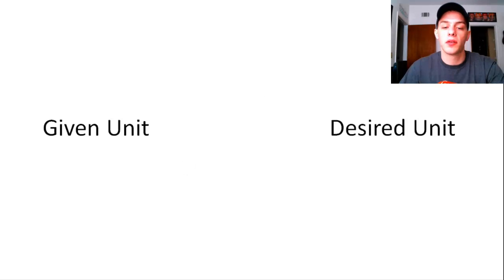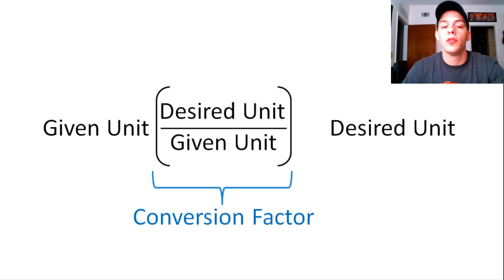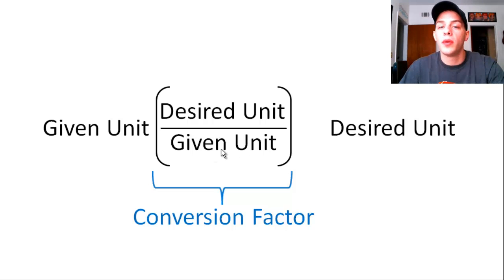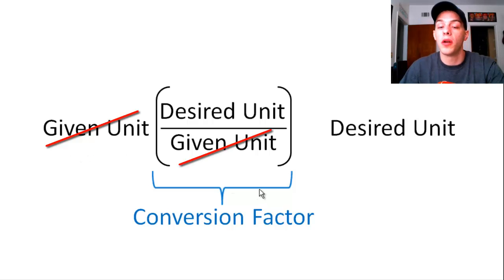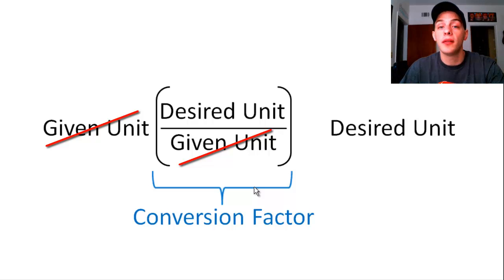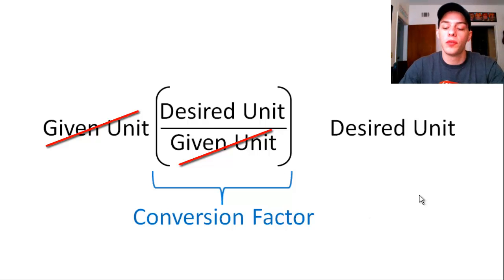In the conversion factor, we're going to divide by our given unit, so that the given units will cancel out with one another. Anything divided by itself is going to cancel out. We divide by our given unit, and then simultaneously multiply by our desired unit. When we put the desired unit in the numerator and the given unit in the denominator, that will ultimately give us our desired unit.